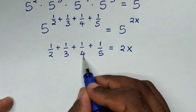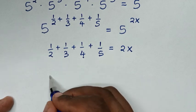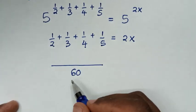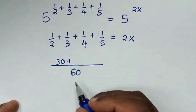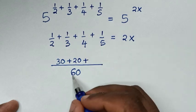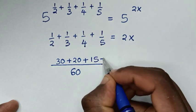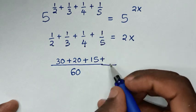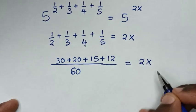In the next step, to add these fractions we find the LCM. Since 4 is divisible by 2, we take 4 times 5 equals 20, and 20 times 3 equals 60, so the LCM is 60. Over 60: 60 divided by 2 is 30, times 1 is 30; plus 60 divided by 3 is 20, times 1 is 20; plus 60 divided by 4 is 15, times 1 is 15; plus 60 divided by 5 is 12, times 1 is 12. This equals 2x.